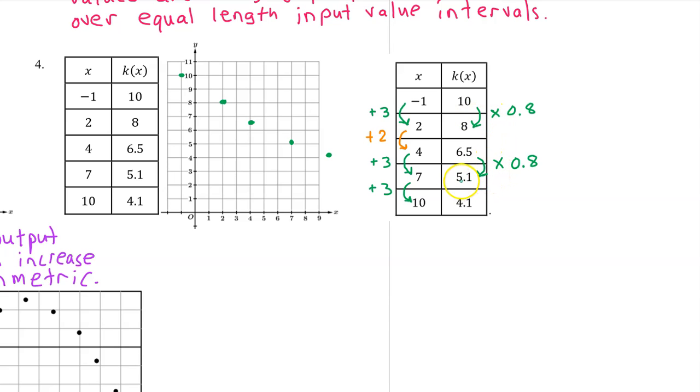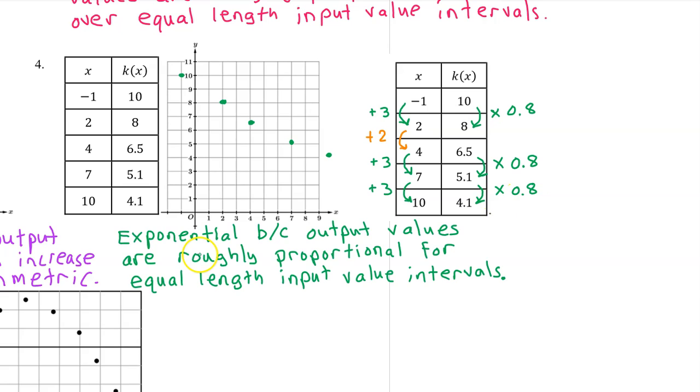Rounding to one decimal place, 5.1 divided by 6.5 is also 0.8. 4.1 divided by 5.1 gives us the third ratio that is roughly 0.8. We can say k of x is exponential because output values are roughly proportional for equal length input value intervals.